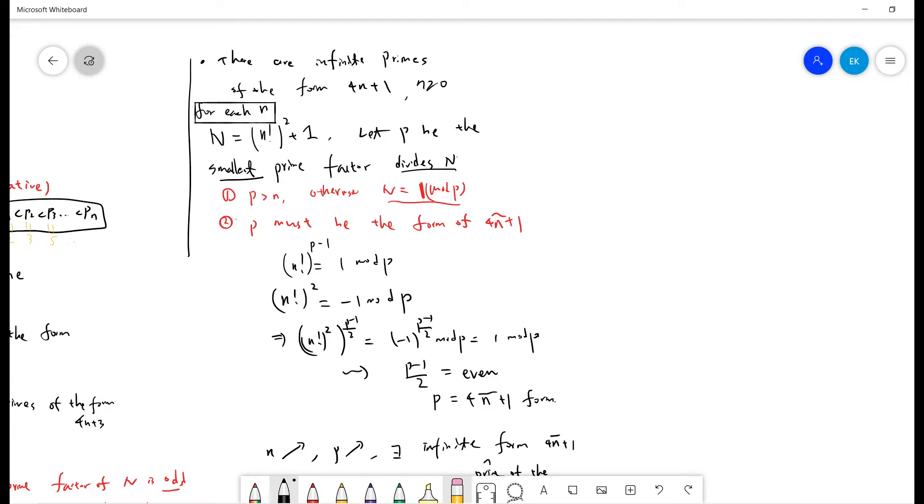And the second is that we can prove that p must be the form of 4n tilde plus 1. The reason is, we start from Fermat's Little Theorem. So n factorial to the p minus 1 mod p is 1. If you don't know how to prove this Fermat's Little Theorem, you can go to my YouTube channel and type Fermat's Little Theorem. I have a proof.